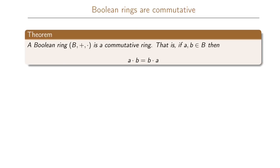Our second theorem says that a Boolean ring is commutative. Remember that all rings are commutative under addition, but they are not necessarily commutative under multiplication. This theorem states that a Boolean ring is also commutative for the multiplication operation, and this follows directly from the definition.